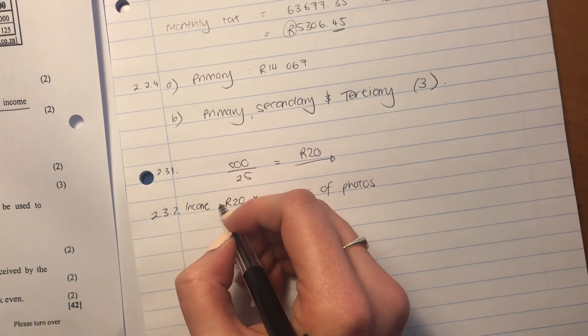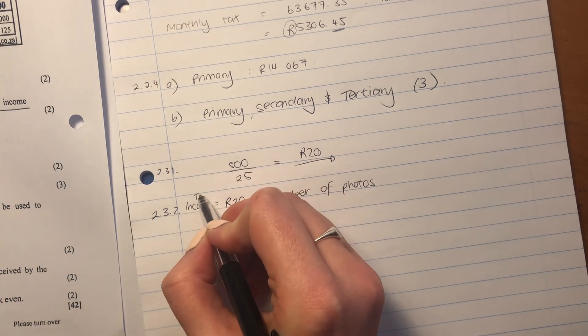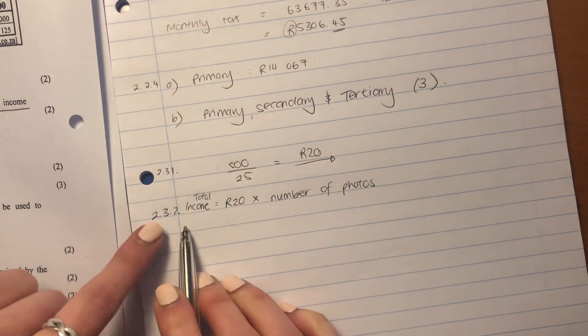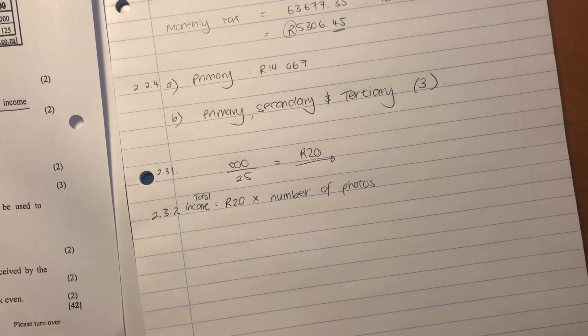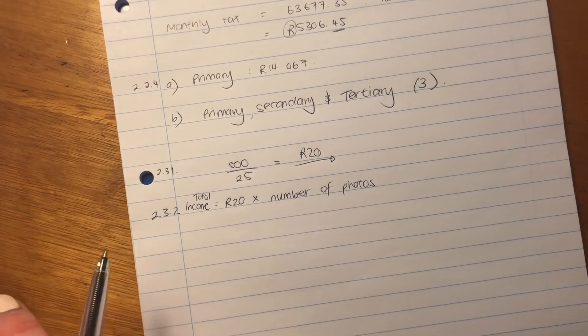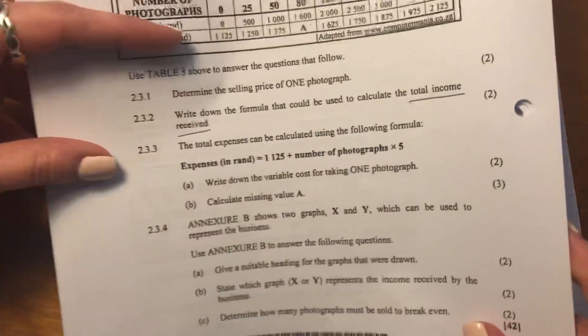I'm just going to say income. We'd say total income. Sorry, it's a little bit squished. Total income equals 20 rand times the number of photos that are actually taken or sold. Perfect. So that's the formula there.